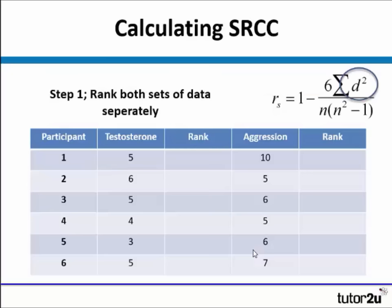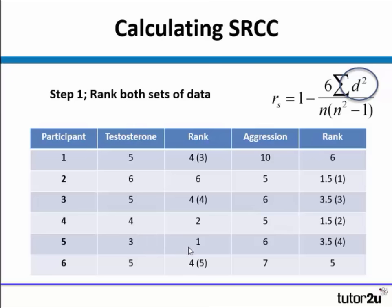The first thing we need to do is rank both sets of data separately. We're going to rank testosterone and we're going to rank aggression — this helps us find the d-squared element of our formula, the difference squared. So we do the ranking. The smallest number was 3, so that gets a rank of 1. 4 was the next score, so that gets rank 2.